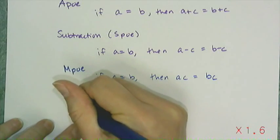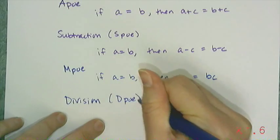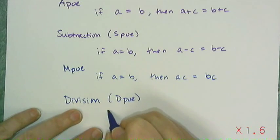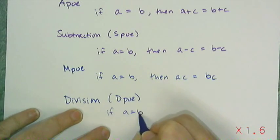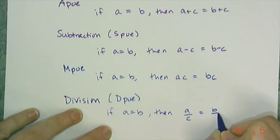And the last one is the division property of equality, which we're going to call DPO. And what DPO says is that if I have A equals B, then A over C equals B over C.